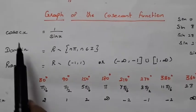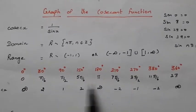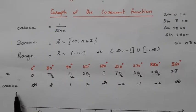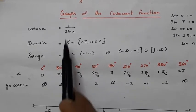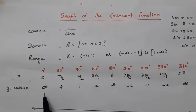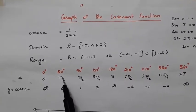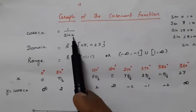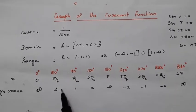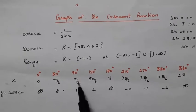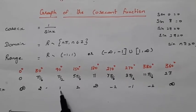Now, what would be the range of cosecant x? Let us give some values of x for one complete revolution and find the corresponding cosecant x values. For x = 0, cosecant x = 1/sin(0) = 1/0, which is infinity. For π/6 (30°), sine(π/6) = 1/2, so cosecant x = 2. For π/2 (90°), sine(90°) = 1, so cosecant x = 1.